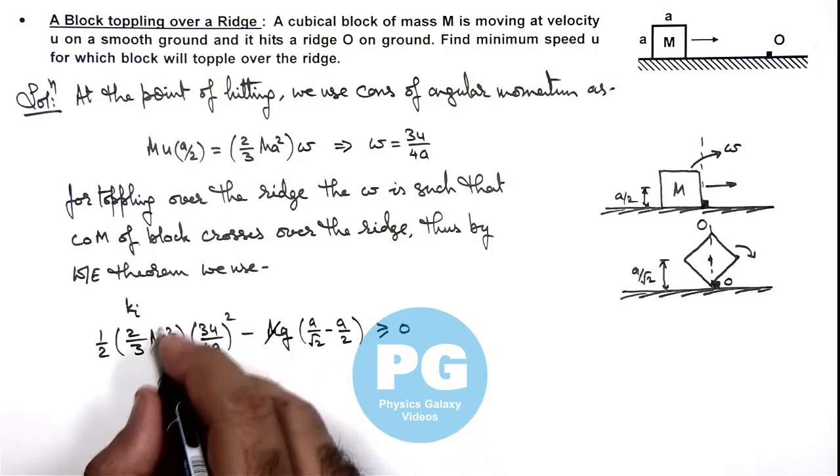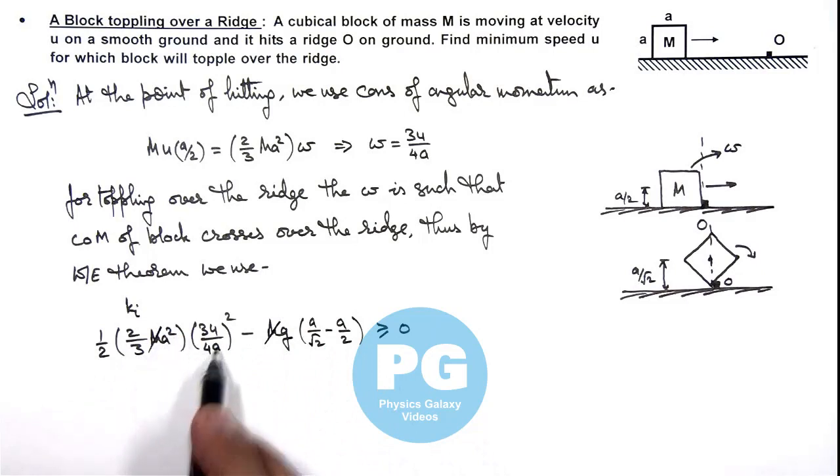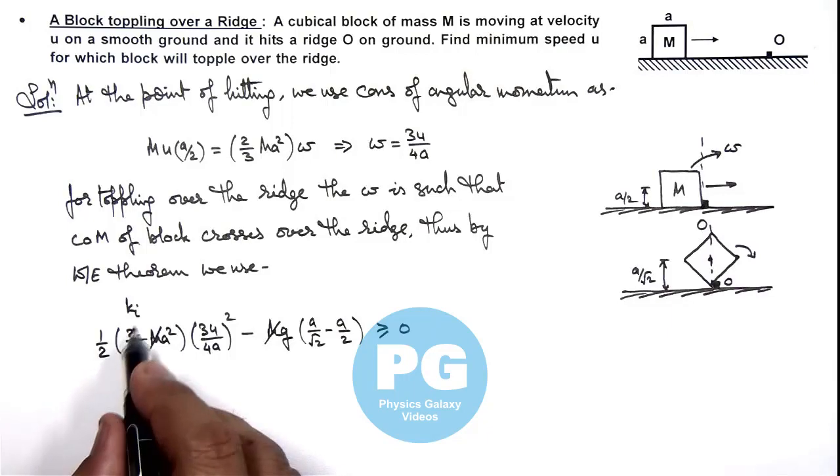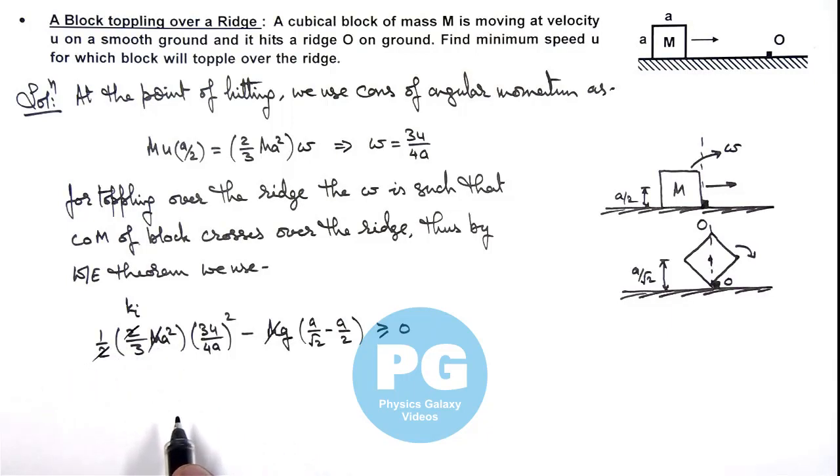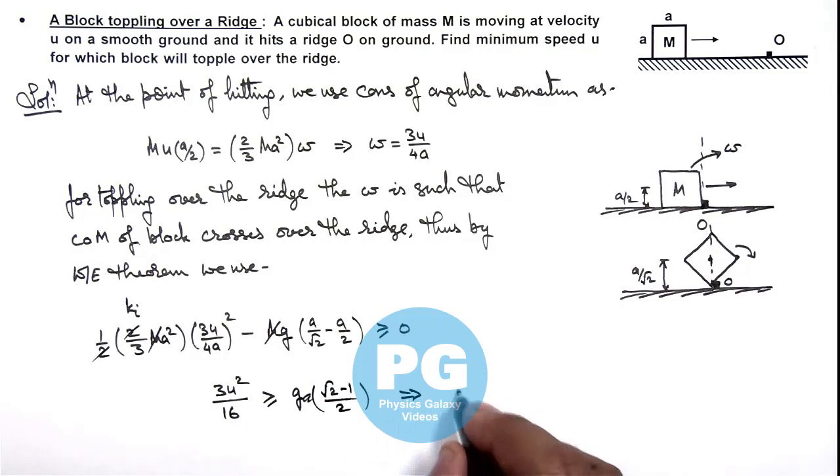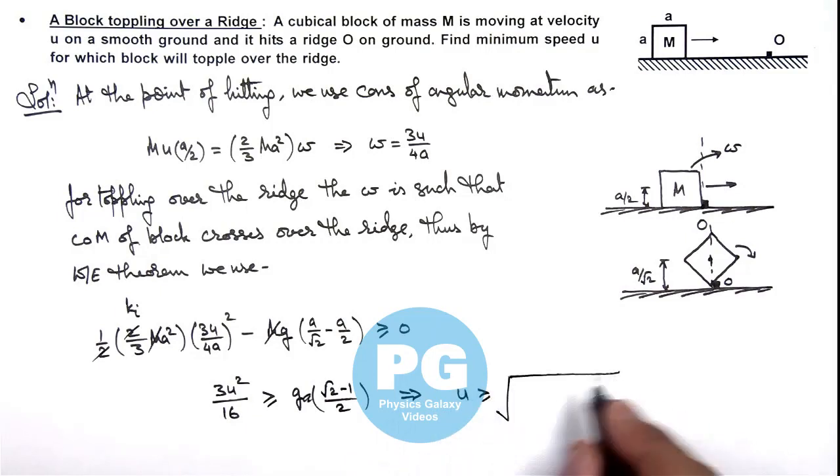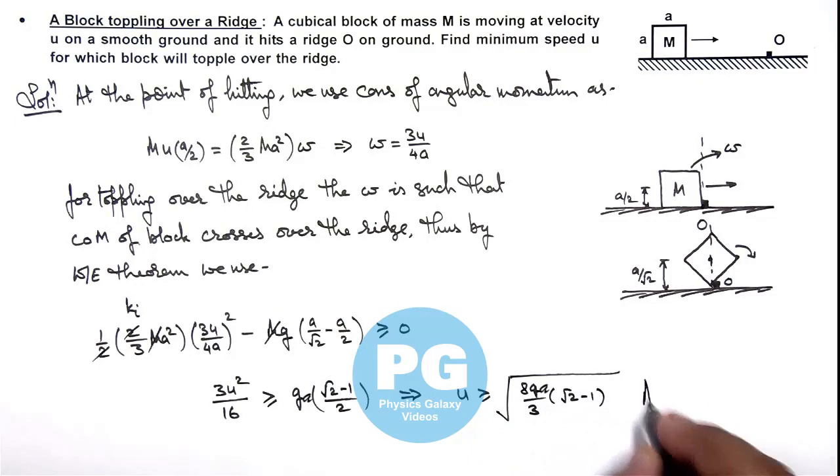Here M gets cancelled out. Here a² also gets cancelled out. And simplifying this relation, we can see, we'll be getting this 2 we can also cancel out. So this will give us the value 3u²/16 should be greater than or equal to ga multiplied by (√2 - 1)/2. And this gives us the value of u should be greater than or equal to √(8ga/3 × (√2 - 1)), that is the result of this problem.